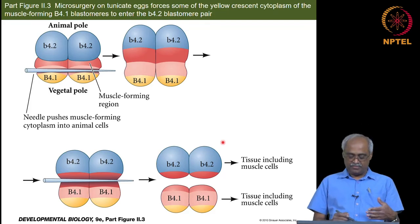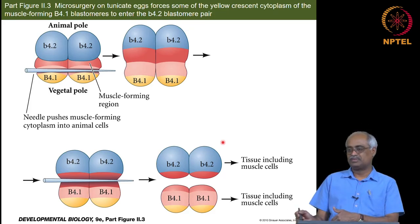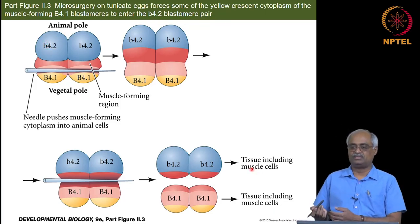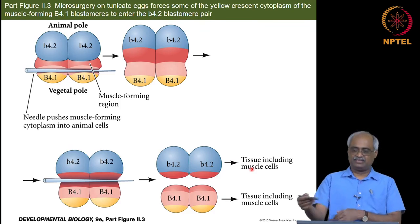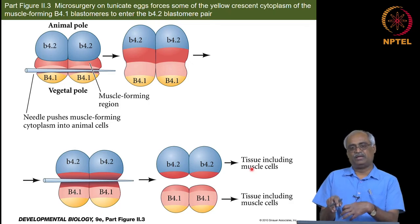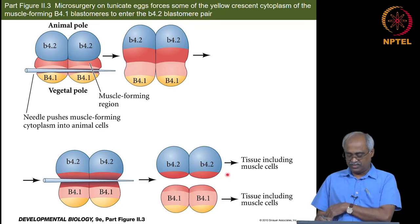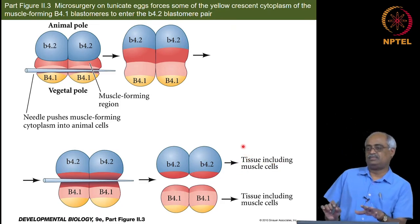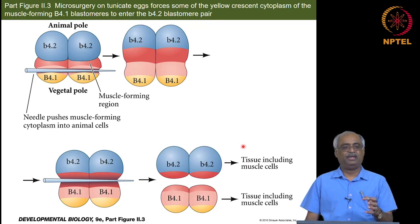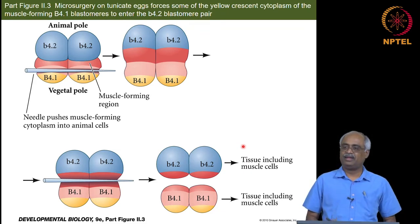By pushing cytoplasm from one region into another, the determinant induces the recipient cell's descendants to make muscle cells as well. Presumably, subsequent divisions produce cells that inherit only ectoderm determinants and make ectoderm, while others with muscle determinants make muscle. This experiment is consistent with the idea that determinants come from oocytes, and which cell inherits which instruction determines which structure is made.